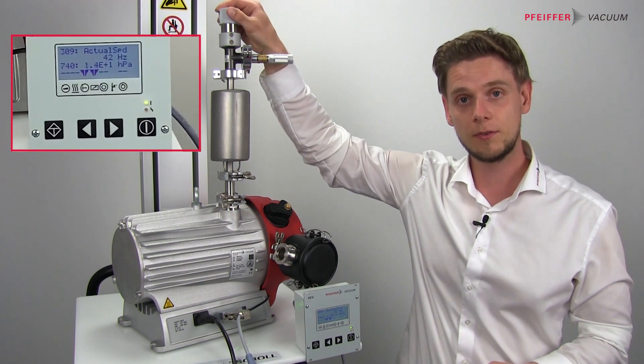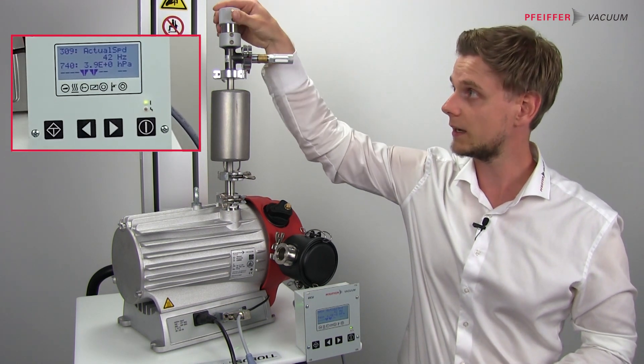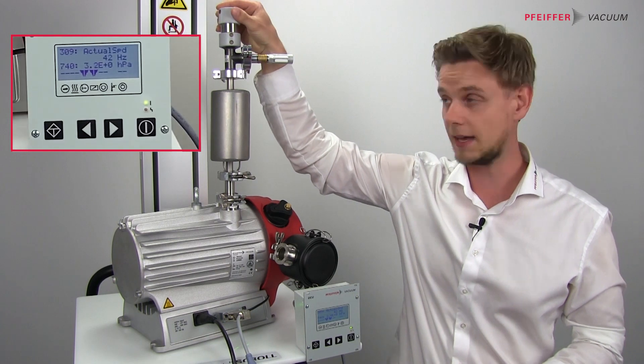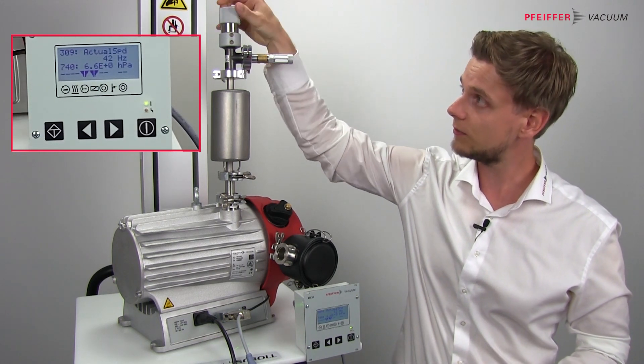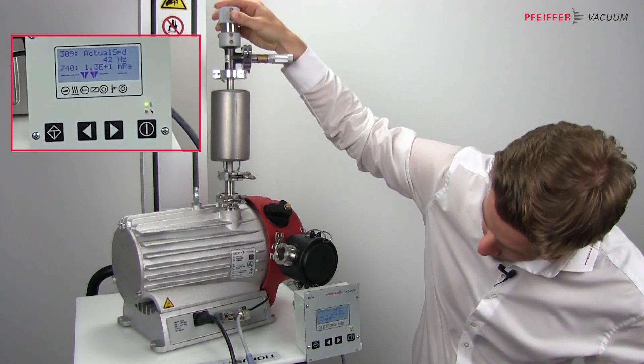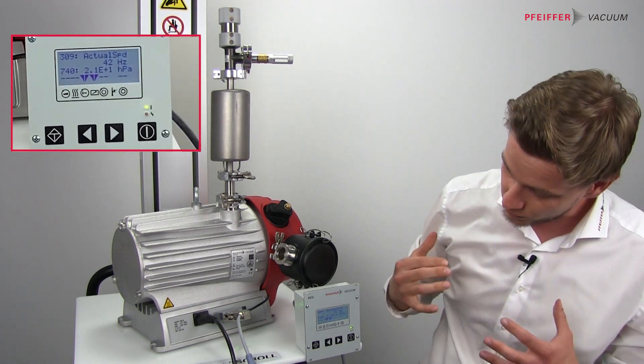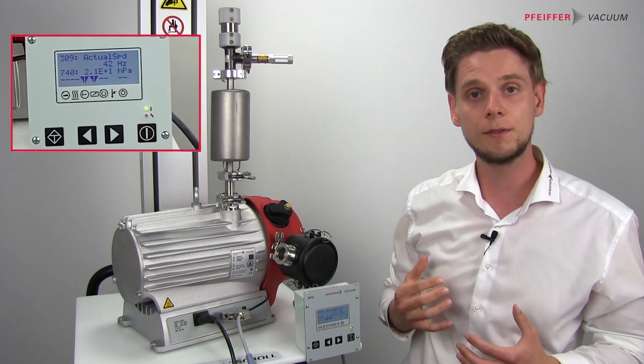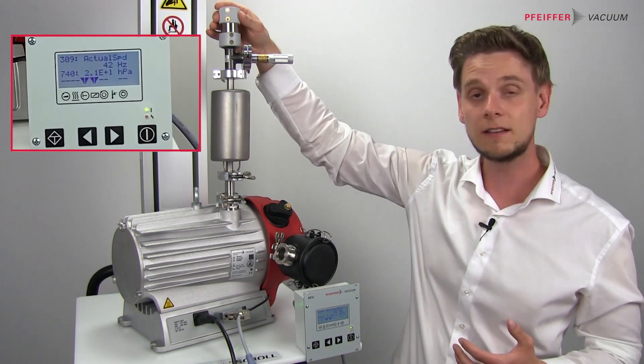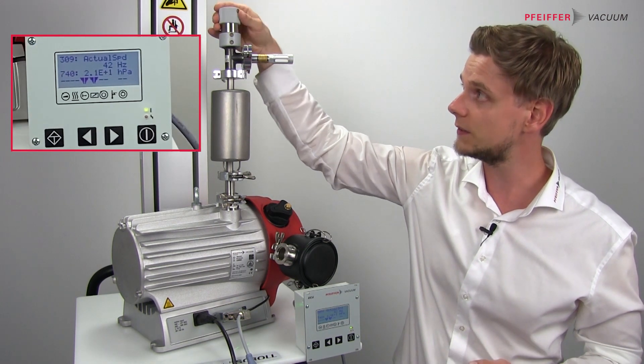Up here I have a fine dosing valve where I can regulate the gas load. If the gas load is very high, the pump switches to full speed and wants to try to get the three millibar. As the gas load is too high, I have to reduce this a little bit.